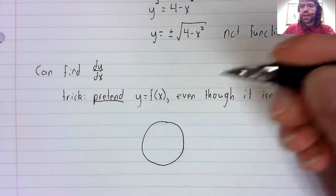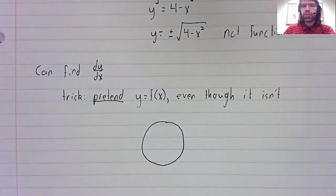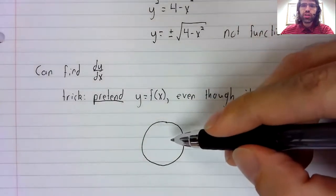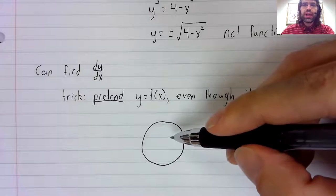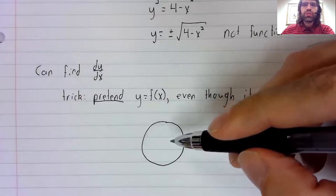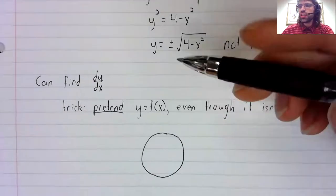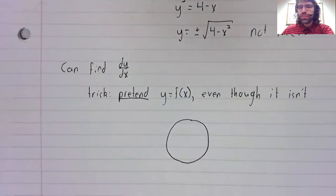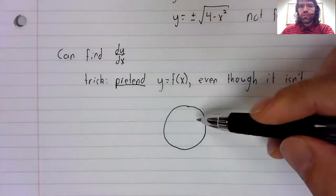Suppose we have a function, or rather not a function. Suppose we have the graph of an implicit equation like this. This is not a function.